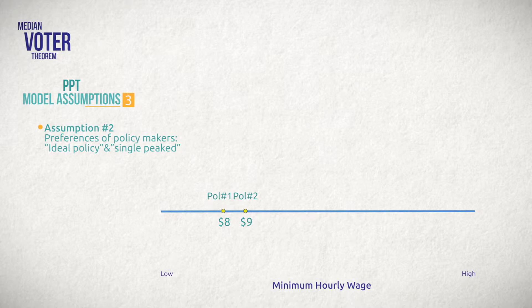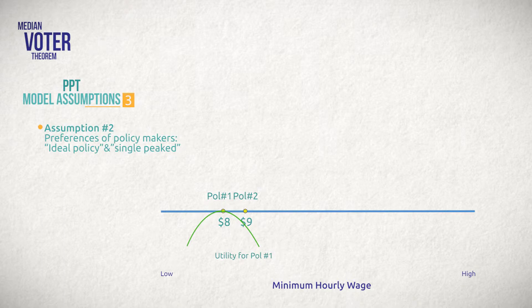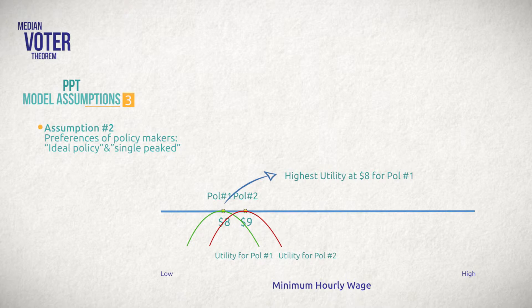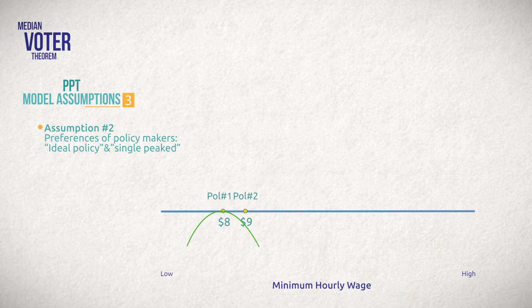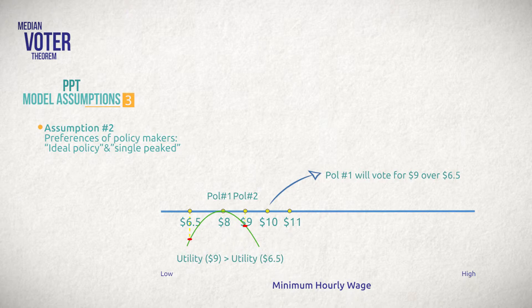Why? Because they represent different constituencies or have different ideologies. We also assume that policymaker preferences are single-peaked. This green curve represents the utility function for policymaker number one associated with each potential policy outcome. The red curve represents the utility function for policymaker number two. Focusing on policymaker number one, you can see that utility is maximized at the policymaker's ideal and declines as the policy moves away from that ideal. This utility function is a key factor for voting decisions. We are assuming that a politician will vote for a policy it prefers — that is, if it increases utility versus the alternative. In this example, a minimum wage of nine dollars provides higher utility than six dollars fifty cents, so policymaker number one votes for nine dollars over six dollars fifty.